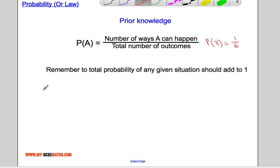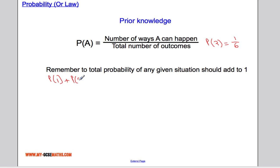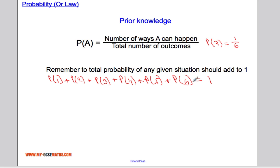Another thing we should know is that the total probability of any given situation should add to one. So if I roll a die, the probability of a one plus the probability of a two plus the probability of a three plus the probability of a four plus the probability of a five plus the probability of a six — they all add together to one, because it's certain one of those outcomes will happen.